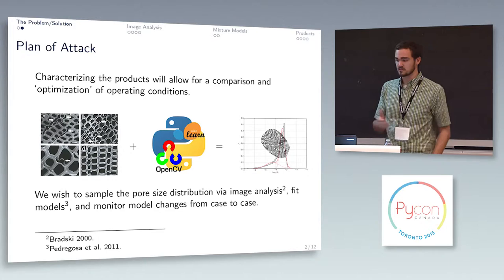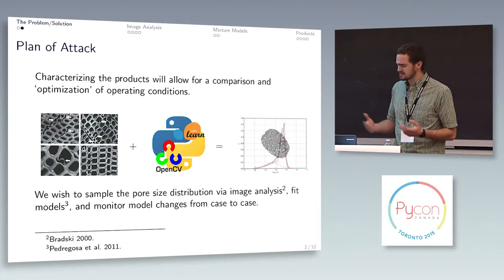So the plan of attack is if we can characterize the products we can get the response surface out of our process and optimize it somehow, or at least better understand it.